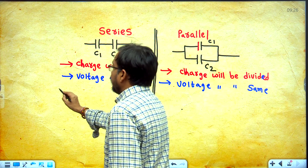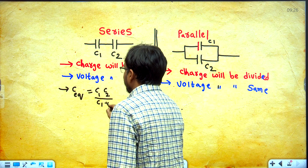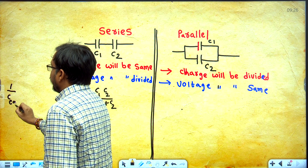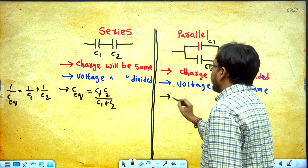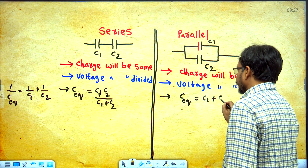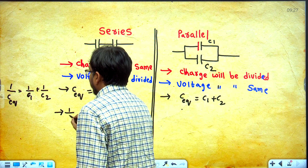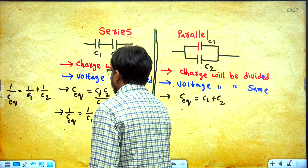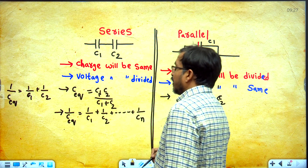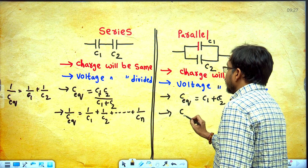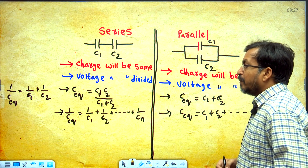Remember students: when the two capacitors are in series, C equivalent equal to C1 C2 by C1 plus C2, or 1 by C equivalent equal to 1 by C1 plus 1 by C2. When the two capacitors are in parallel, C equivalent equal to C1 plus C2. If N capacitors are in series: 1 by C equivalent equal to 1 by C1 plus 1 by C2 plus ... plus 1 by Cn. If N capacitors are in parallel: C equivalent equal to C1 plus C2 plus ... plus Cn.